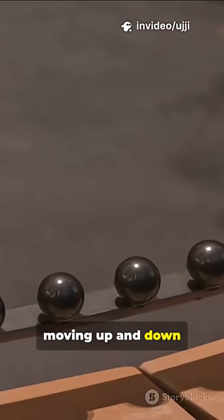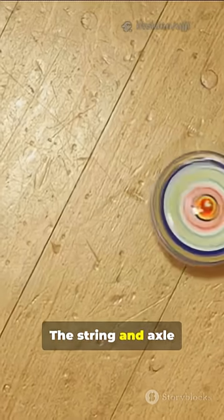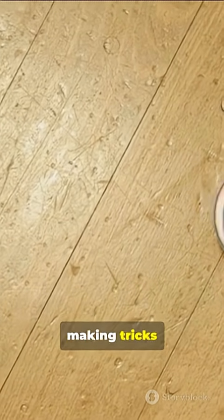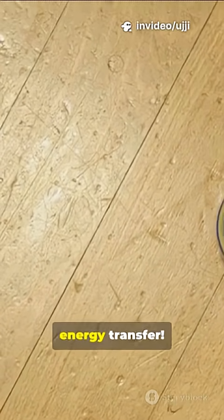The yo-yo keeps moving up and down as you control it with the string, constantly switching between potential energy when high and kinetic energy when moving or spinning. The string and axle design lets the yo-yo store and release energy smoothly, making tricks possible by controlling this energy transfer.